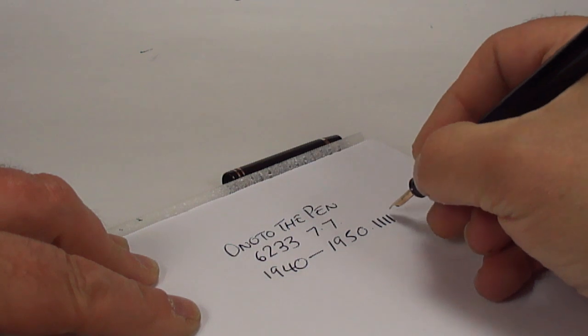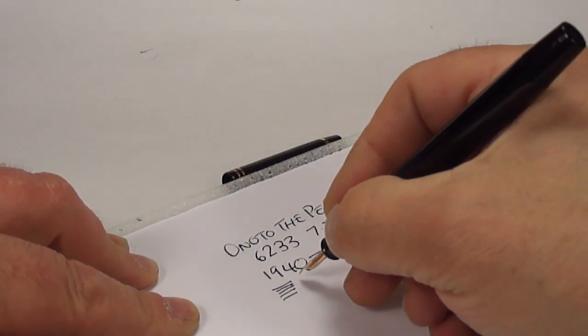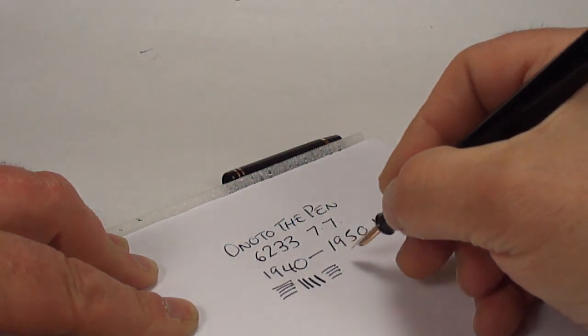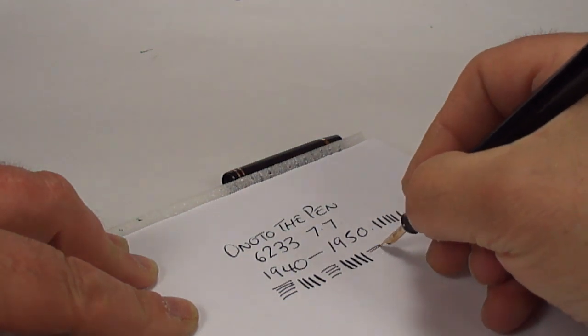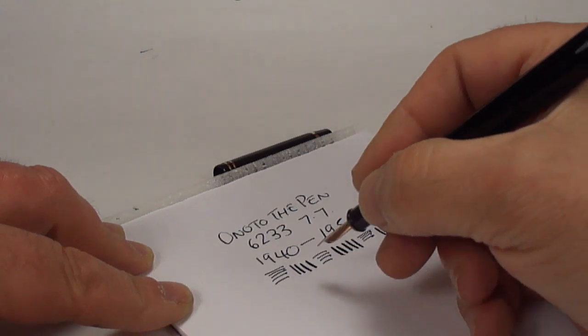Now, these particular nibs on the Onotos are actually renowned for being, well, for being quite flexible. And if I press down, you can see I can get quite a thick line on the downward stroke.